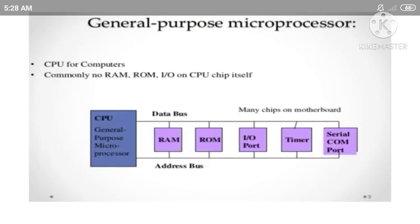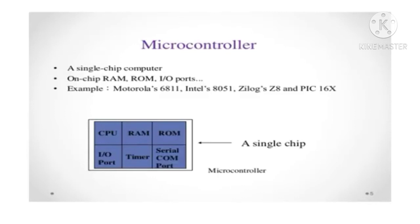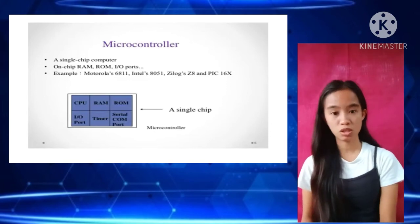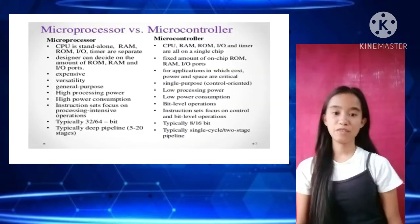For the general purposes: in a microprocessor, the CPU is standalone while the RAM, ROM, I/O port, timer, and serial communication are separated from the CPU. In a microcontroller, the CPU, RAM, ROM, input/output port, timer, and serial communication are all integrated in a single chip. Just by looking at the pictures you can analyze the differences between the two.